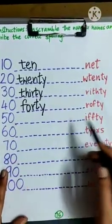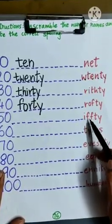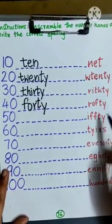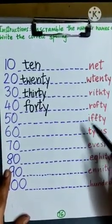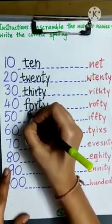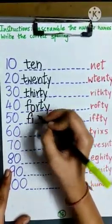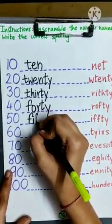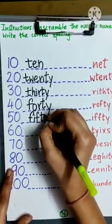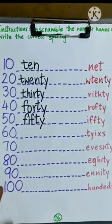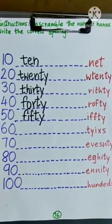Then we have number 50. I-F-F-T-Y. Now, we arrange it. First should be F, then I, then again F, then T, and Y, fifty. F-I-F-T-Y, 50.